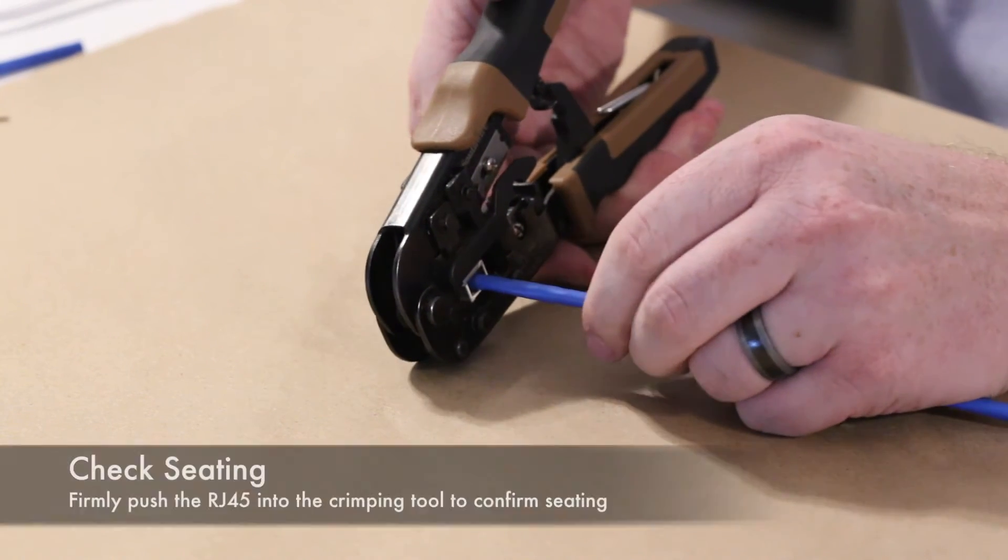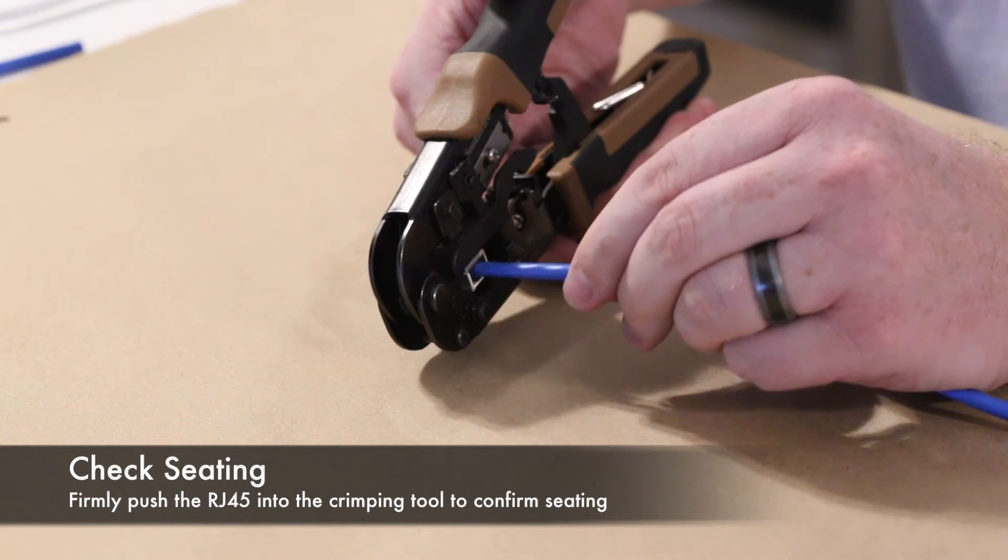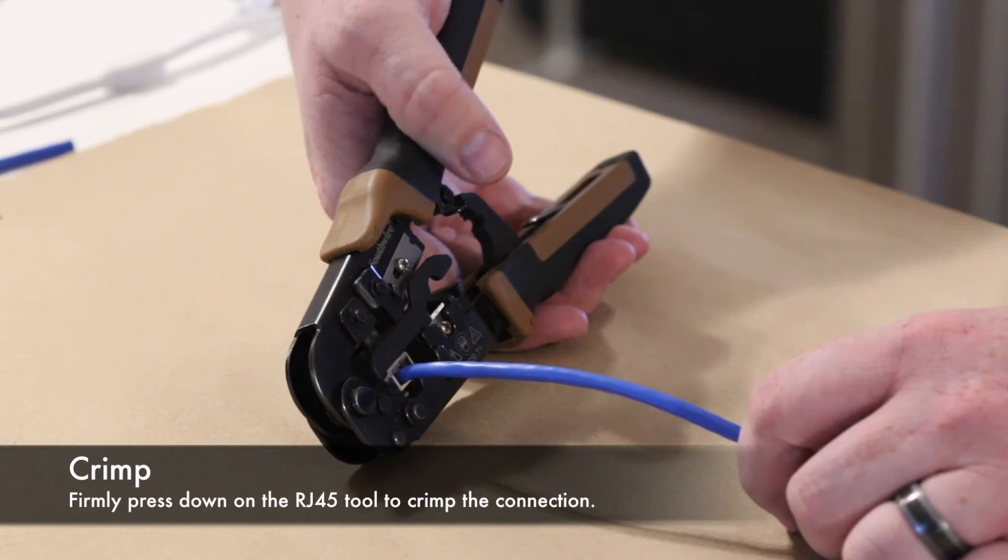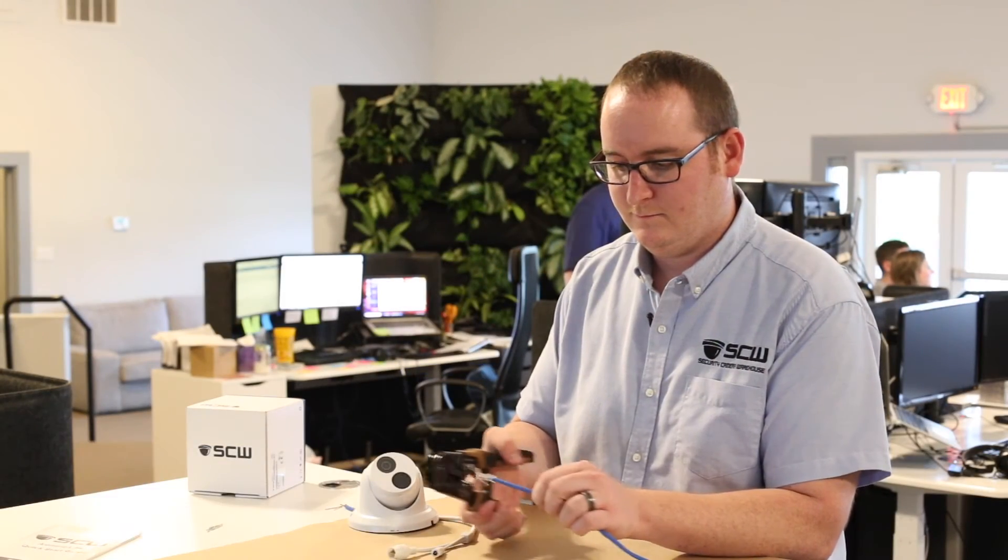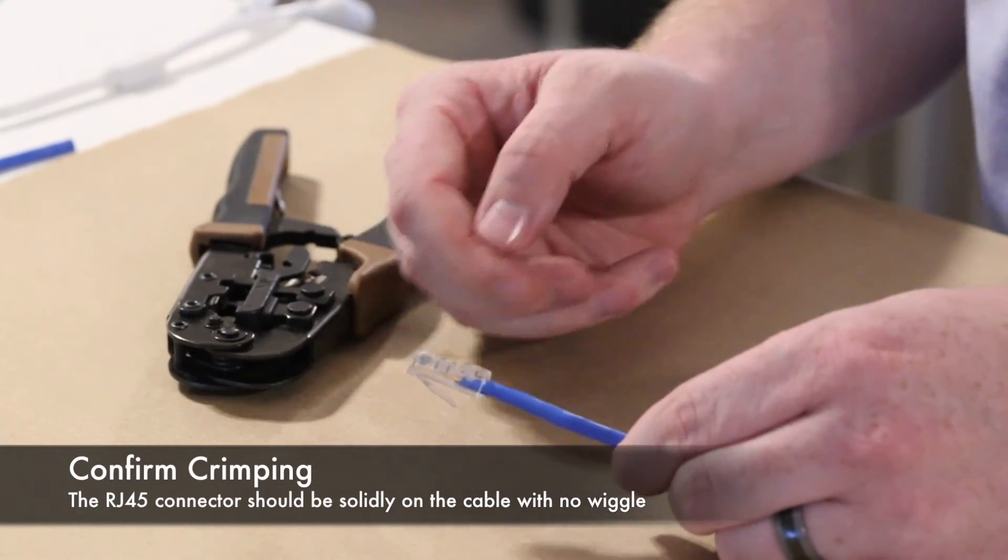Now when it's inserted into the crimping tool we want to make sure that the connector is firmly seated to the back of the tool. This will ensure the best connection. Now I'm going to press down on the RJ45 tool to crimp the connection. We can now remove the connector from the tool. I'm now going to verify that the connector is firmly seated on the ethernet cabling.